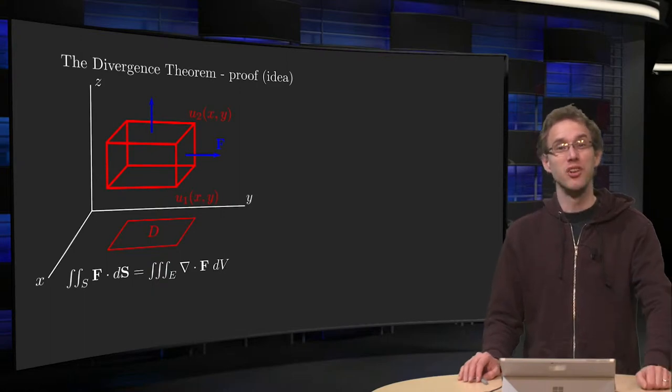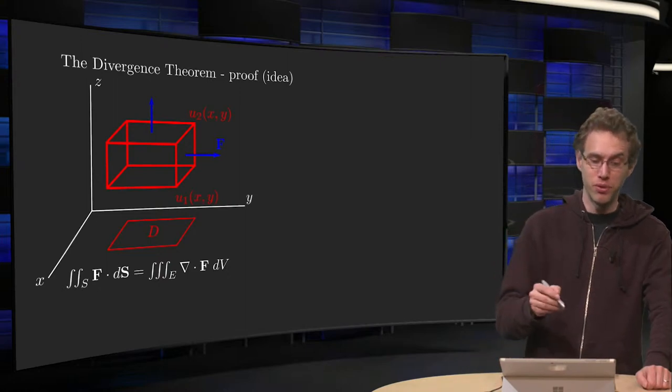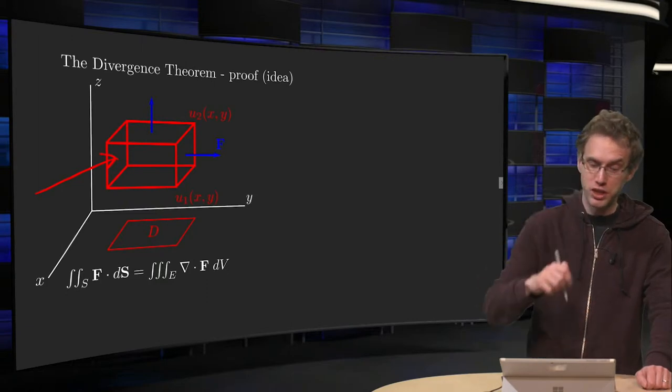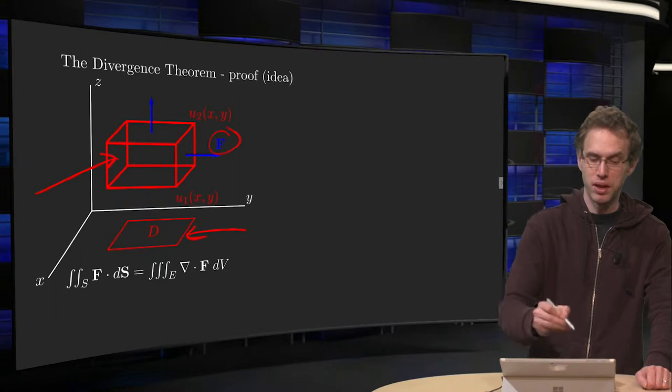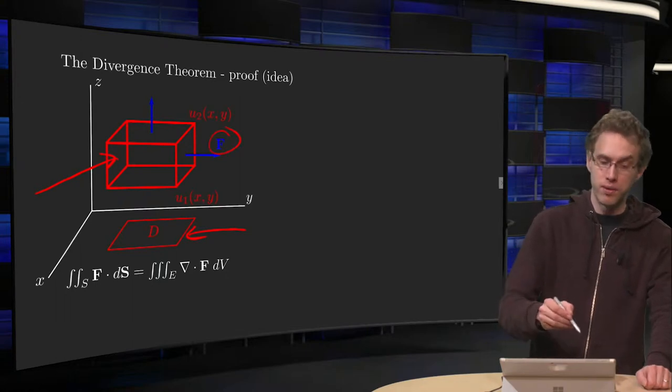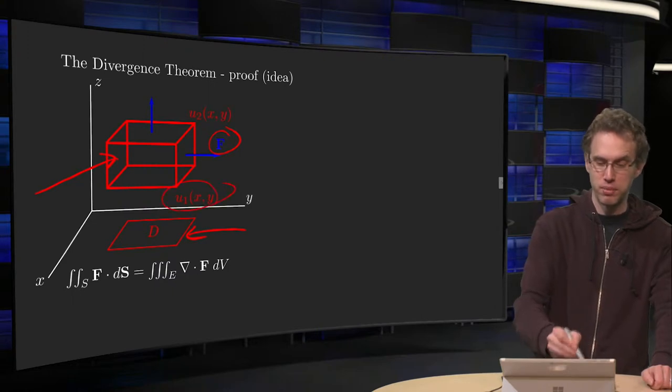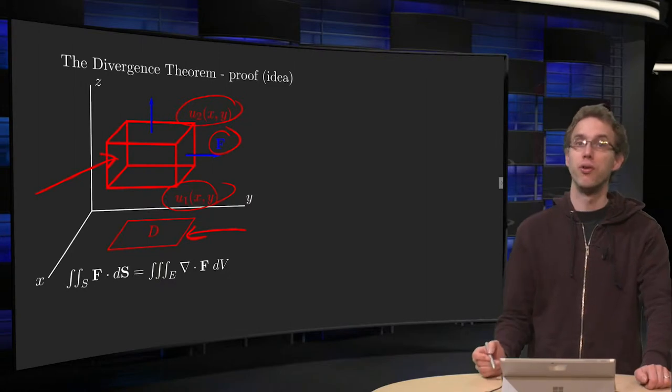And then it's actually not that difficult, as you will see in this video. So we will have our solid E over here, the projection on the xy plane we will call that D, we have some vector field capital F. The lower part of our surface will be parameterized by u1 of x and y, the upper part by u2 of x and y.